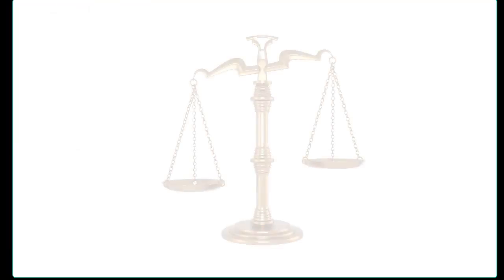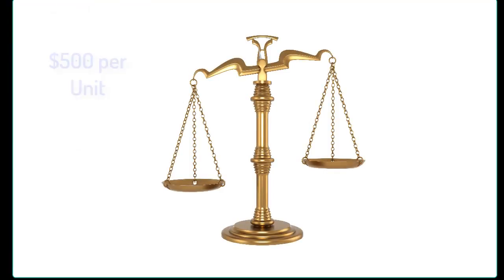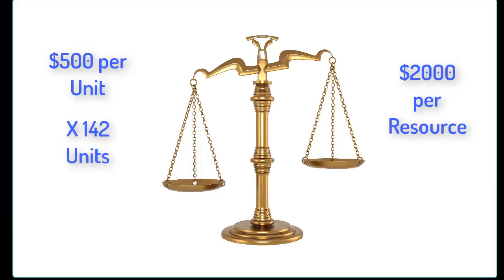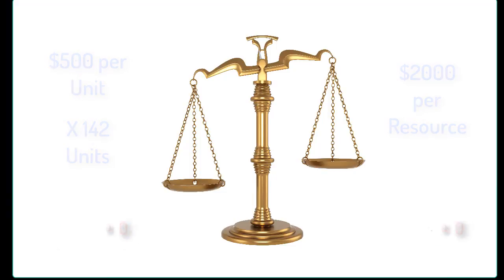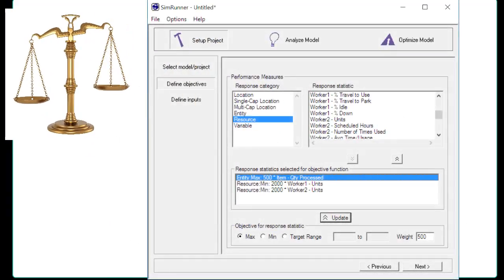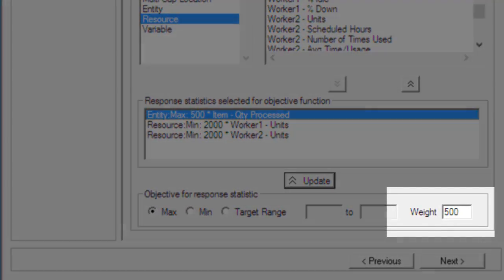Often the elements of the formula require weighting factors to balance the bias built into the model. For example, value of items may be high per unit versus the cost of adding an additional resource. The weighting factor allows you to refine the goal.